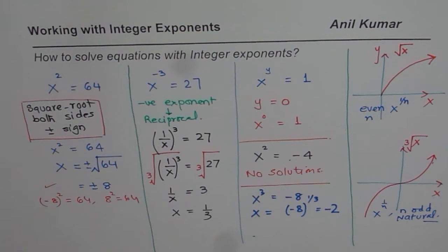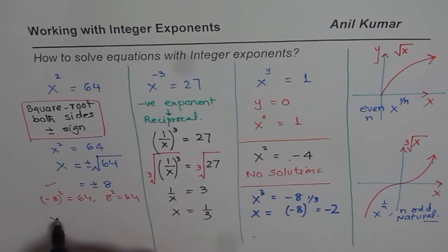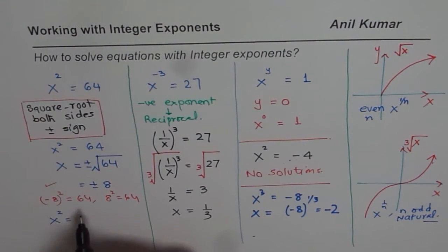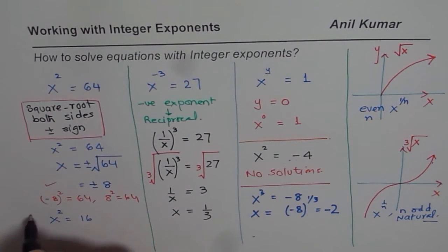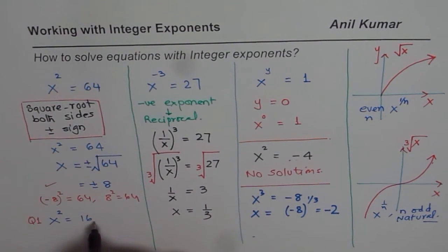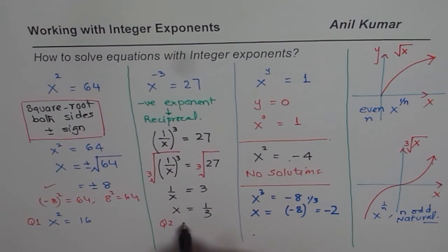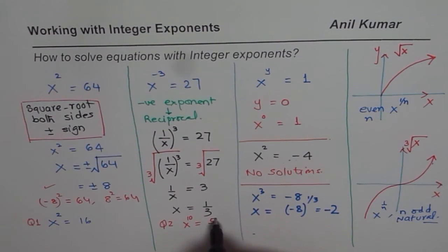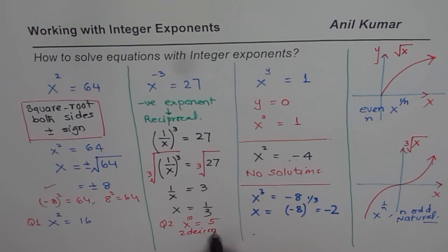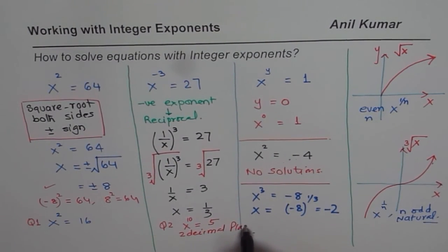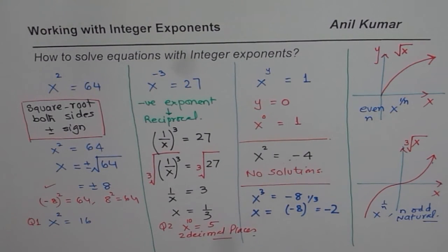For you to practice, try to find the solution for x squared equals 16 — that is question 1, and remember to write both answers. Question 2: x to the power of 10 equals 5, round the answer to two decimal places. You can use a calculator to solve this question. I hope that helps — thank you and all the best.